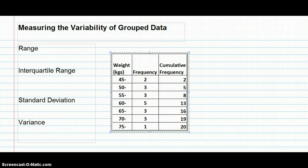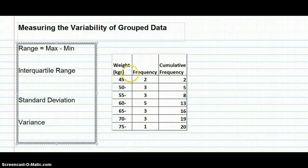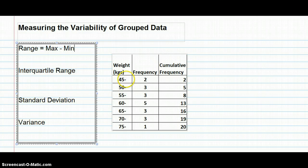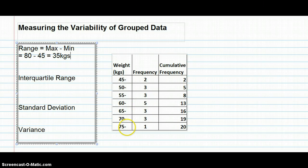Now let's look at group data. Finding the range for grouped data presents a difficulty: we can't see the exact maximum and minimum values because they're hidden inside the groups. What we do is assume the minimum value is at the bottom of the first group and the maximum is at the top of the last group. In this case that gives 80 minus 45 equals 35 kilograms.